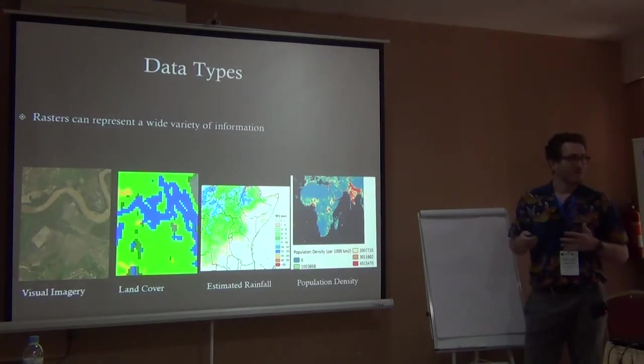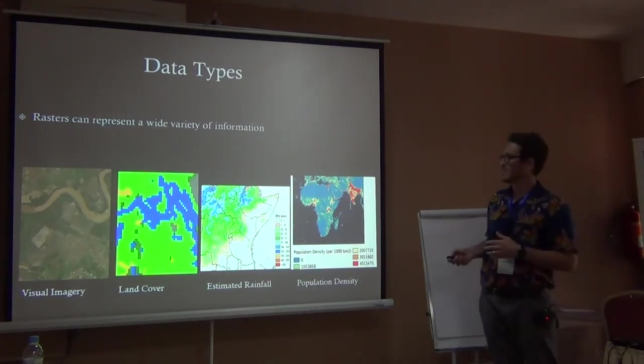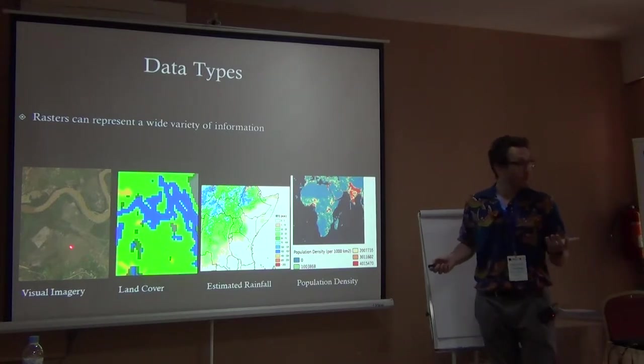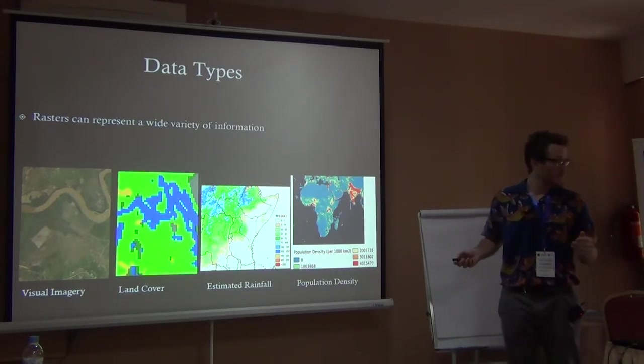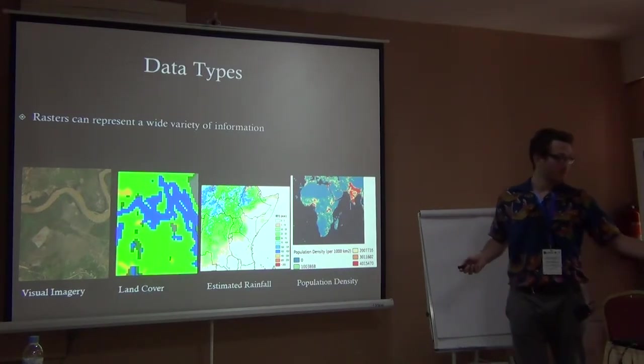Rasters can represent lots of different types of information. A photo is the original visual example, but there are many more.